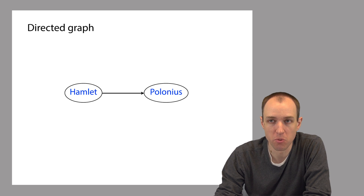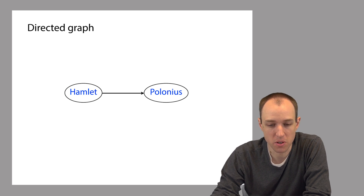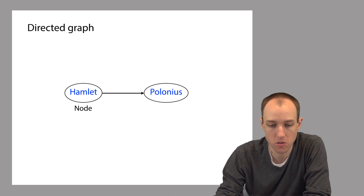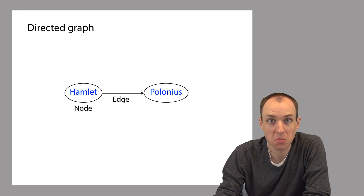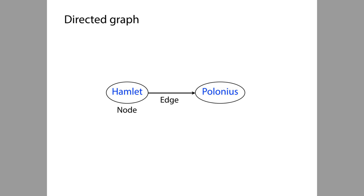If you haven't seen something like this before, it's pretty straightforward. Here's a very simple example of a directed graph. There are two kinds of things in this graph: there are nodes, which are drawn as ovals, and there's an edge, which is drawn as an arrow. The nodes and edges usually have some kind of meaning. For example, the nodes here represent characters from the play Hamlet — this node on the left is Hamlet, this node on the right is Polonius — and the edge also has some meaning, such as 'Hamlet kills Polonius.'